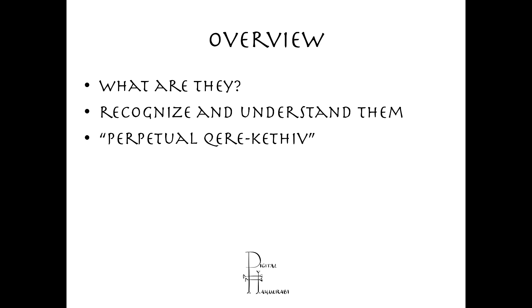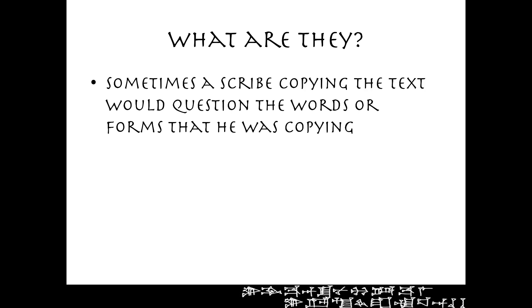Sometimes a scribe copying the text would question the words or forms he was copying. Let's say he's copying through the book of Genesis and he sees a word in the text and thinks, 'I think this is wrong, I think this is an error.' The problem is that they considered that text sacred, so they didn't want to just go changing it. They didn't want to write what they thought was the correct form.